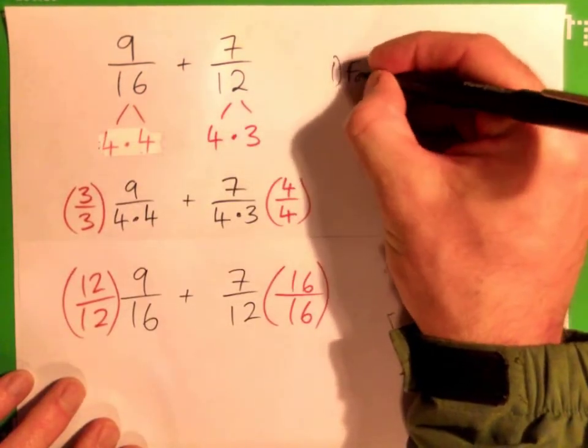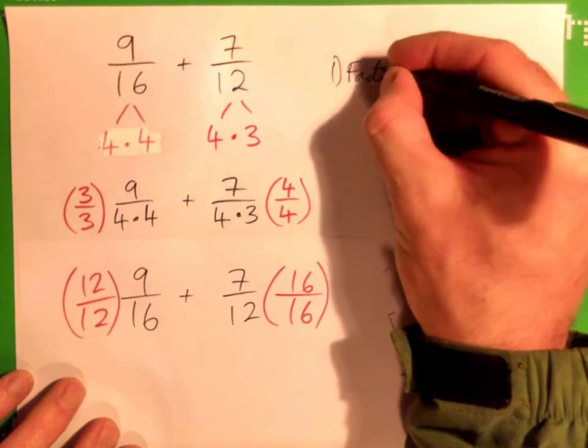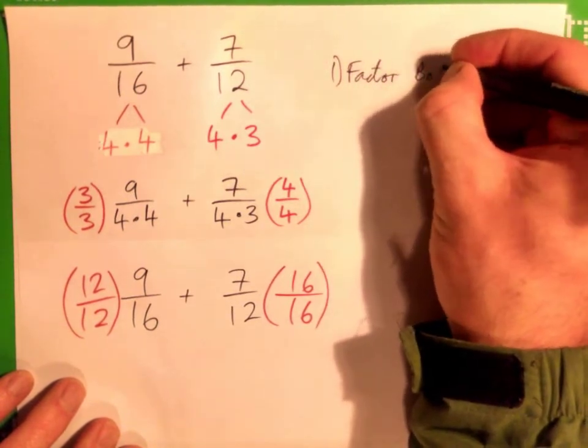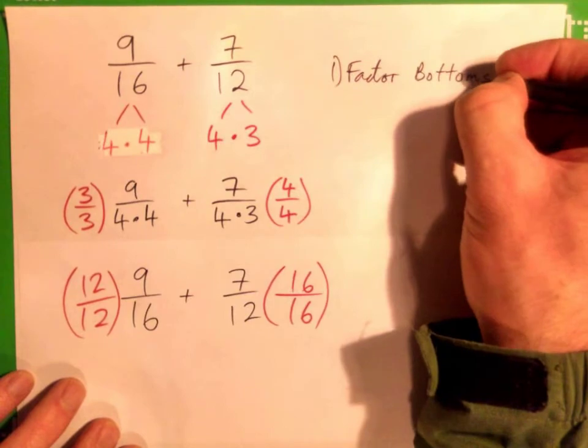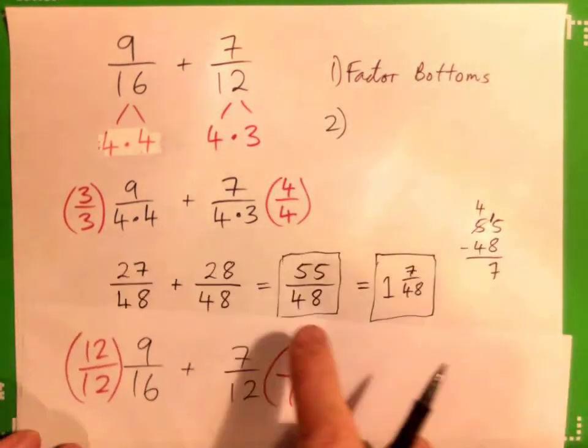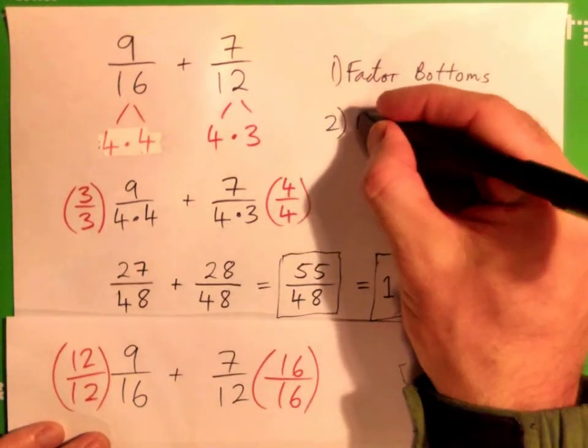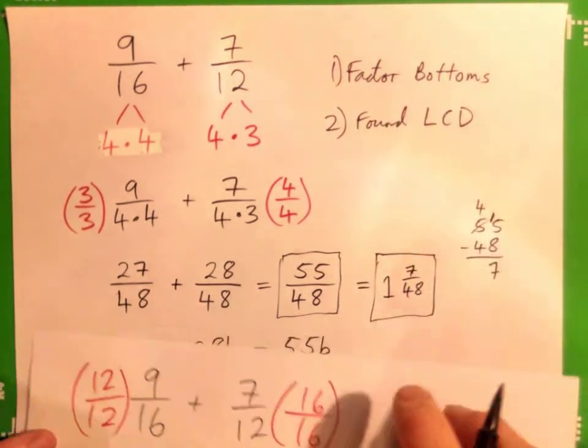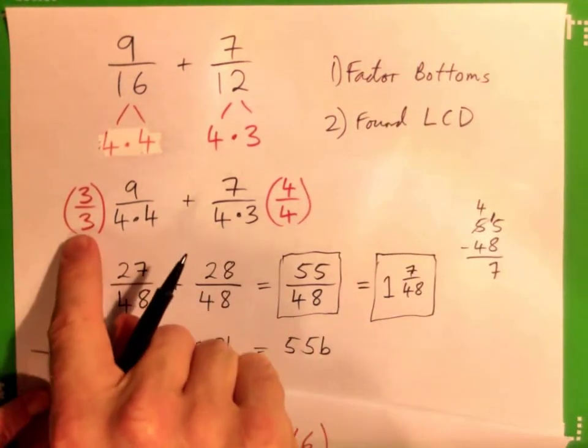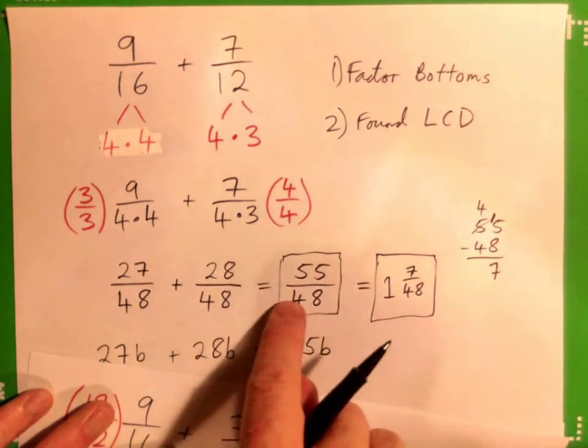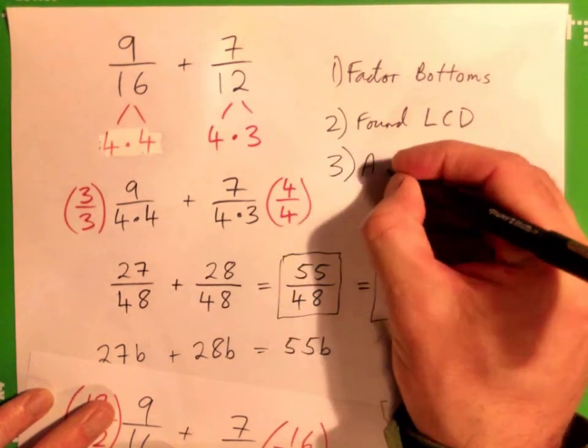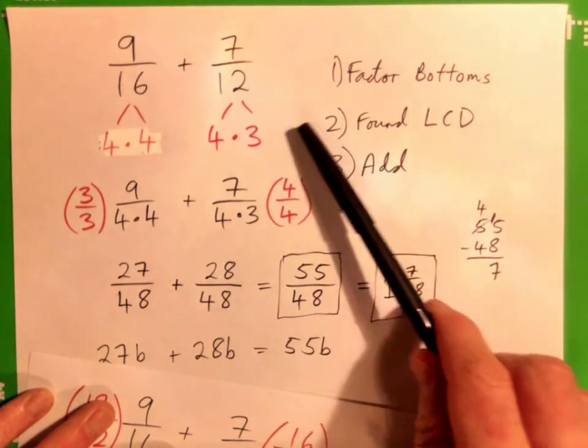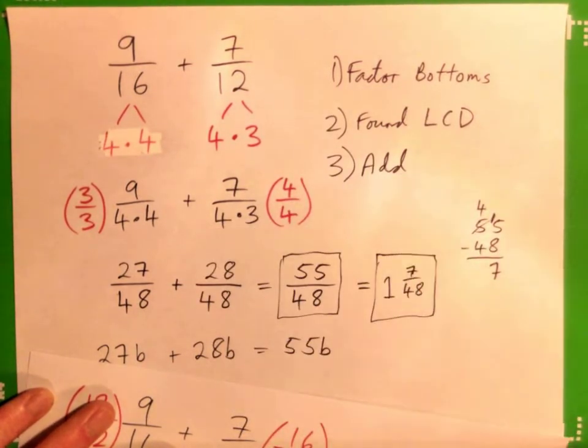So what we did is we factored the bottoms, or the denominators, and then we basically found our lowest common denominator, which was 48, by multiplying by 3 over 3 and 4 over 4, and then we just added. So that's our three steps. Factor the bottoms, find the lowest common denominator, and add.